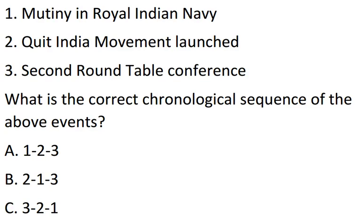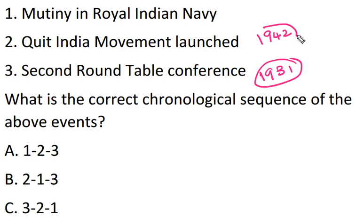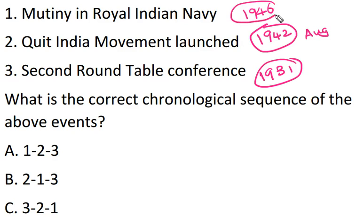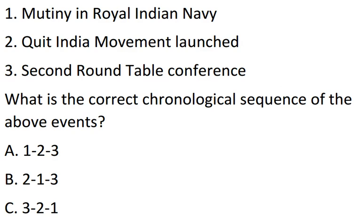The Second Roundtable Conference happened in 1931, the Quit India Movement was launched in August 1942, and the Mutiny in the Royal Indian Navy started on February 18th, 1946. So, 1931, 1942, and 1946 — the chronological order is 3, 1, 2.